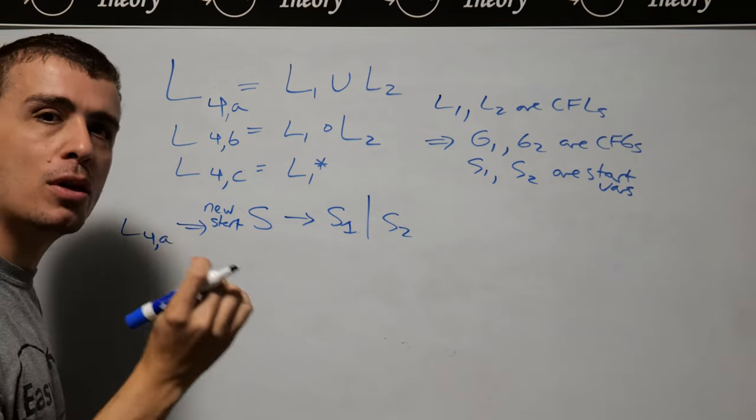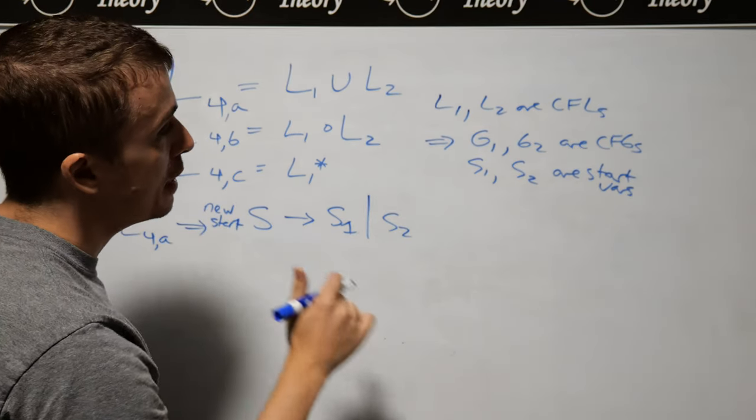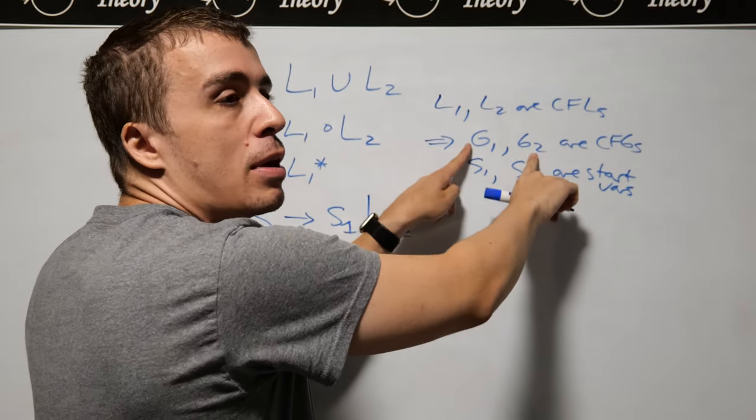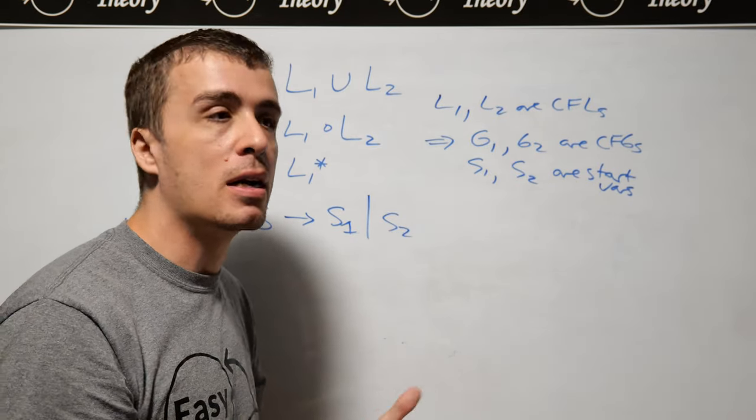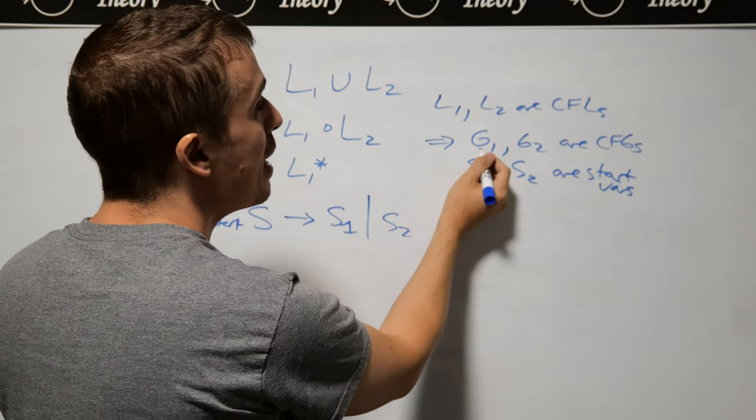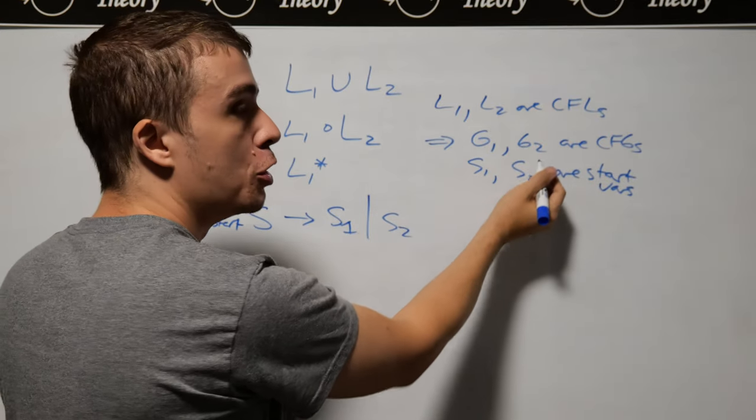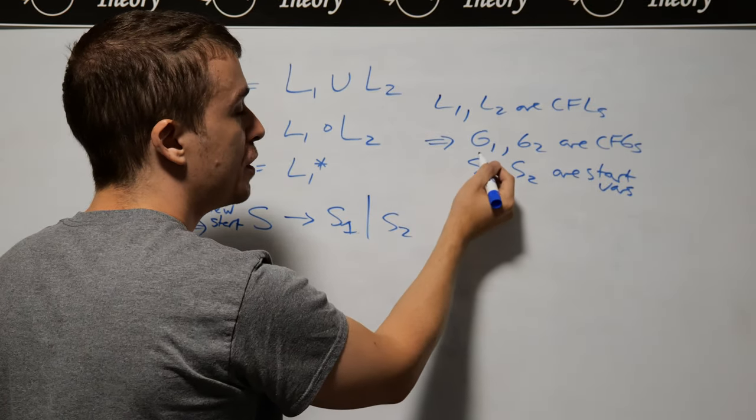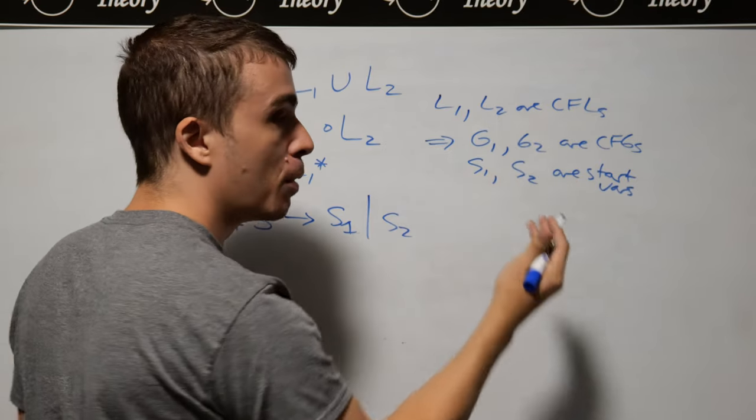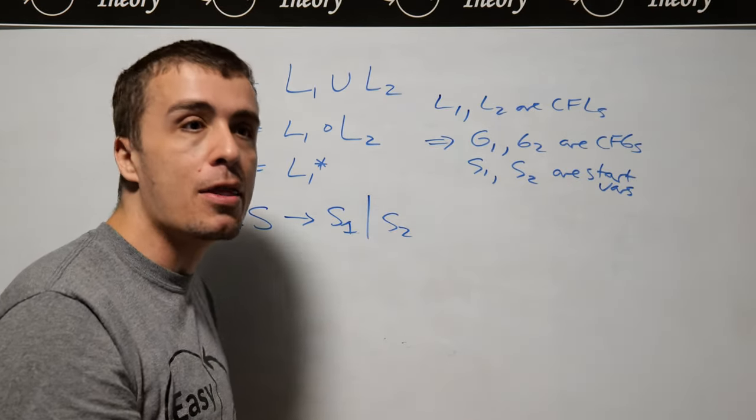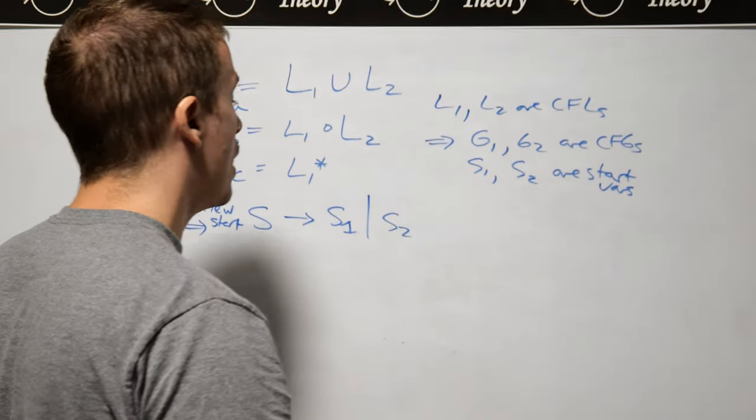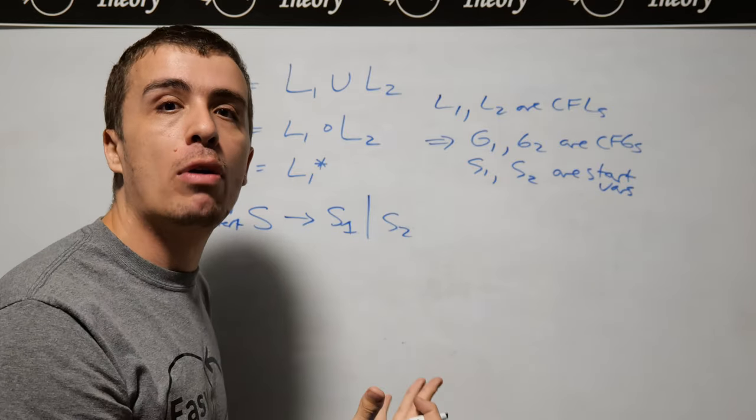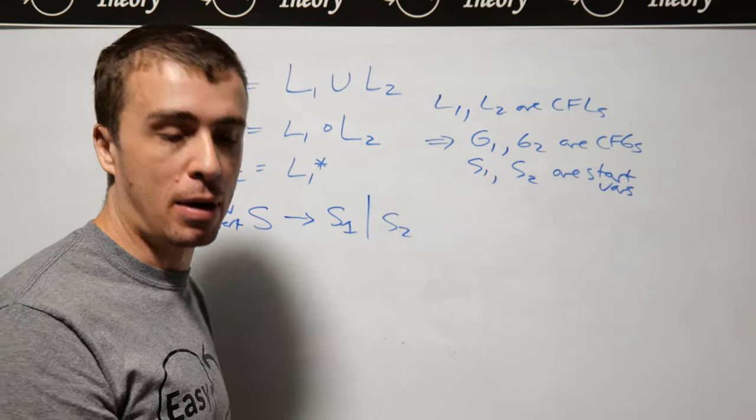There's one small technical problem though, is we got to be sure that the context-free grammars we're dealing with don't have overlapping variables. Because if G1 has a variable called A, and G2 also has a variable called A, then any rule that G1 involves with A could, in principle, if we just combine the two grammars together, could switch over. And that can cause havoc. Whereas if we rename all of the variables in the grammars, then we have no problem whatsoever.